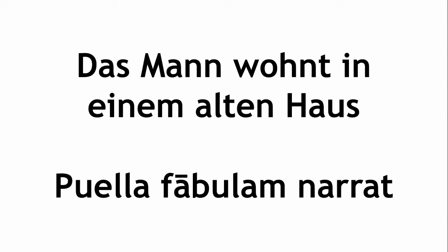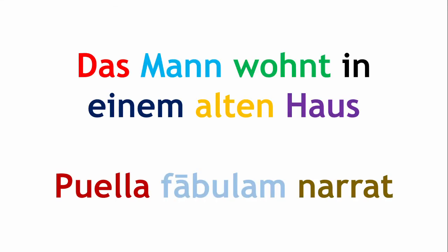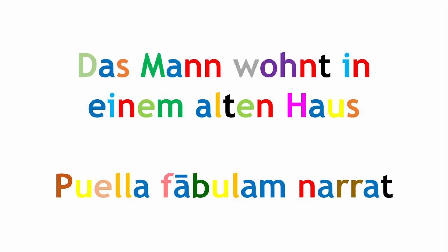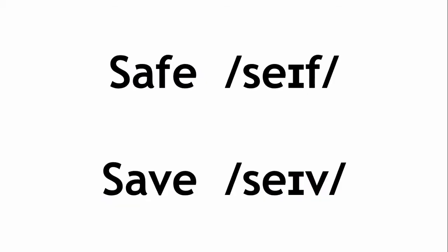All spoken languages are made up of distinct parts, which combine to convey meaning. The smallest of these parts is the phoneme. A phoneme is a unit of speech which distinguishes words from one another. For example, in English, safe and save differ by one sound.